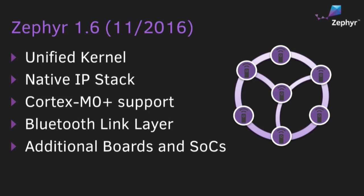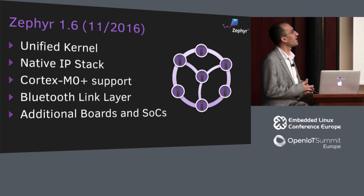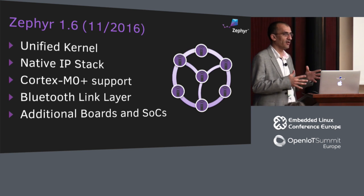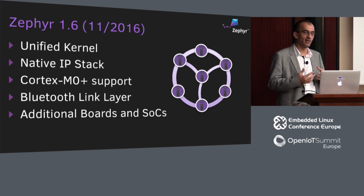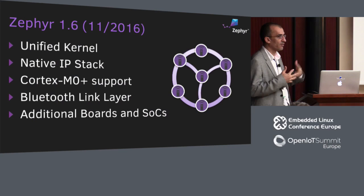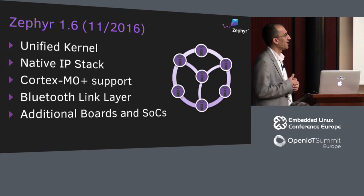The major change for 1.6 is the unified kernel, which is already in master. We currently have the unified kernel but are still able to build the microkernel and nanokernel. We are also working on a native IP stack, which is in a branch right now but we are planning to merge it — if everything works well, by end of next week.